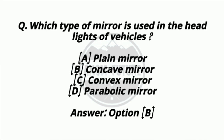Question 21. Which type of mirror is used in the headlight of vehicles? Option A: Plane mirror. Option B: Concave mirror. Option C: Convex mirror. Option D: Parabolic mirror. Answer: Option B — Concave mirror.